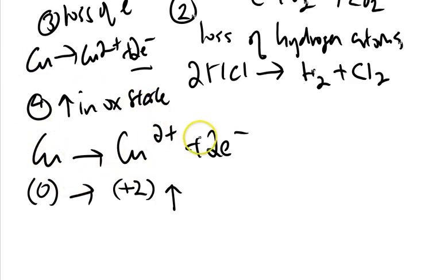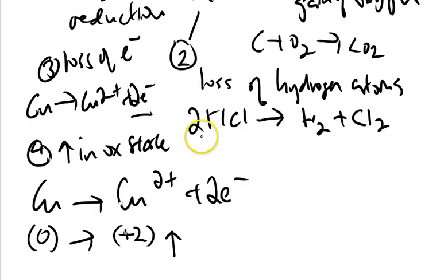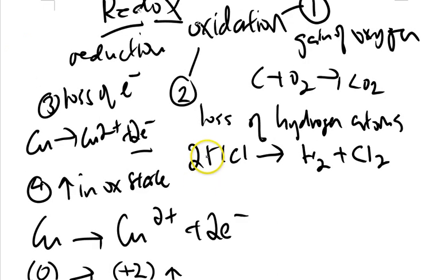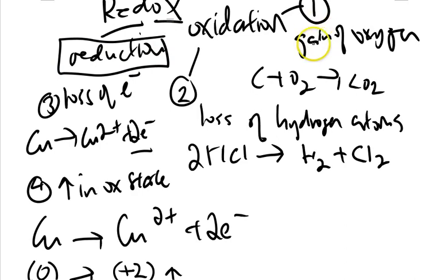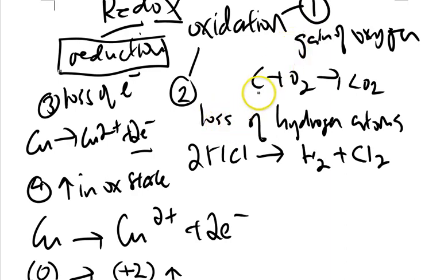The four definitions of oxidation, when flipped around, give you reduction. Instead of a gain of oxygen, a loss of oxygen is a reduction reaction. A gain of hydrogen atoms is a reduction reaction. A gain of electrons is a reduction reaction. And a decrease in oxidation state is a reduction reaction.